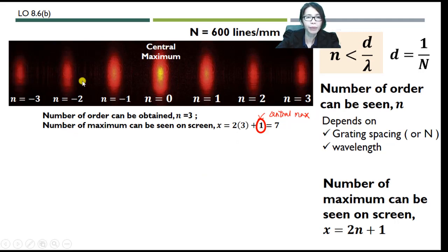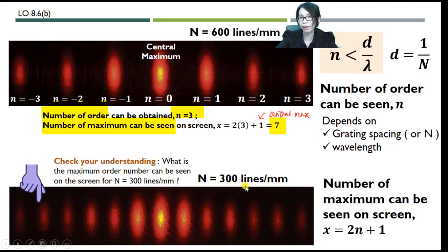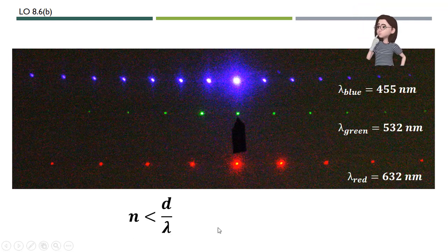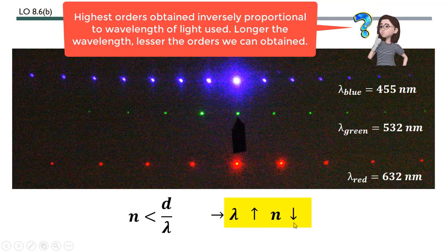You can check your understanding: what is the maximum order number that can be seen on screen for N = 300 lines per millimeter? Note that the highest observable order also depends on the wavelength used. The highest order is inversely proportional to wavelength — the longer the wavelength, the fewer orders we can observe.